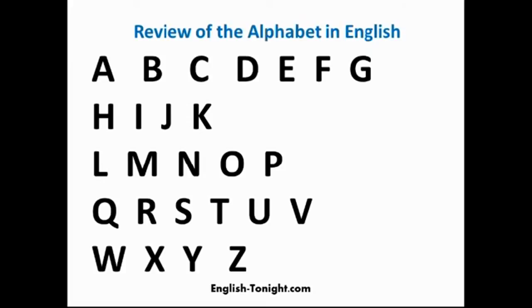Let's review the alphabet in English: A, B, C, D, E, F, G, H, I, J, K, L, M, N, O, P, Q, R, S, T, U, V, W, X, Y, Z.